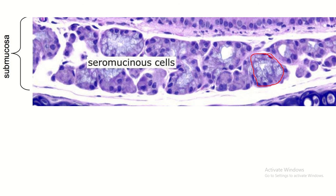This is a mucous acinus. You can see there is a whitish area, the nuclei are basally placed and flattened — flattened due to the thick mucous secretion. It looks white because during histological slide preparation, the mucous secretion is washed out, so these acini always appear whitish.